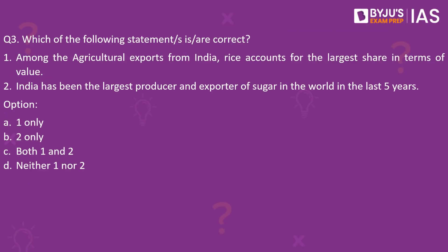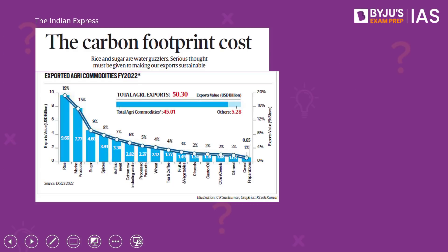Moving on to the third question of the day: which of the following statements is or are correct? The first statement reads: among the agricultural exports from India, rice accounts for the largest share in terms of value. The second statement reads: India has been the largest producer and exporter of sugar in the world in the last five years. This article in today's The Indian Express, titled 'The Carbon Footprint Cost,' analyzes the export of agricultural products from India, especially rice and sugar.